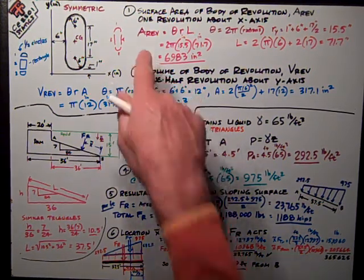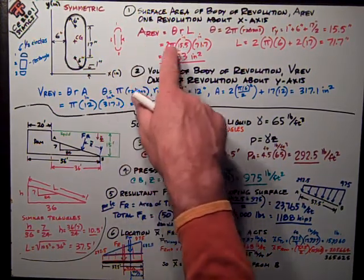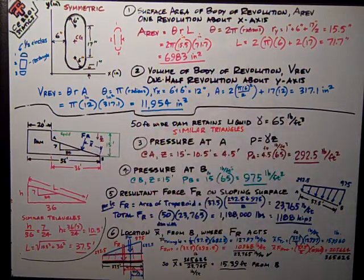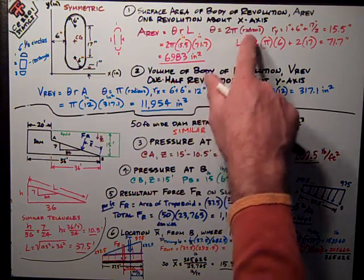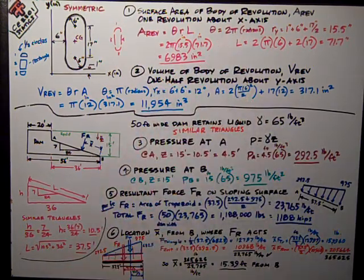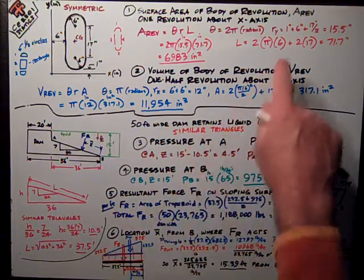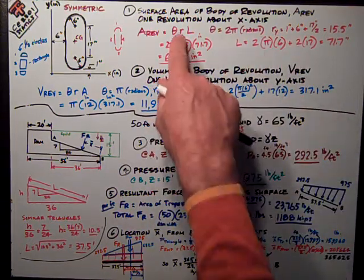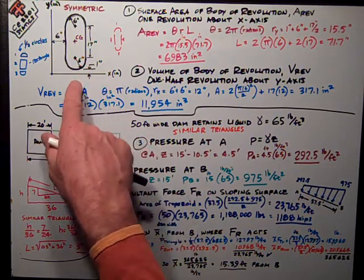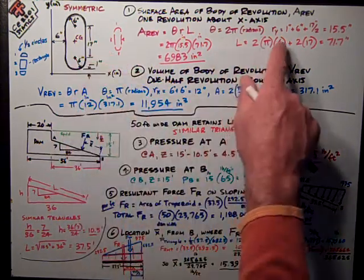The formula from the equation sheet is the area of revolution is theta RL, where theta is the number of revolutions in radians. For this case, it's going to be 2π, one complete circle. The distance R is the perpendicular distance to the axis that you're rotating about, which is the x-axis, so it's a y-distance, R = Y.